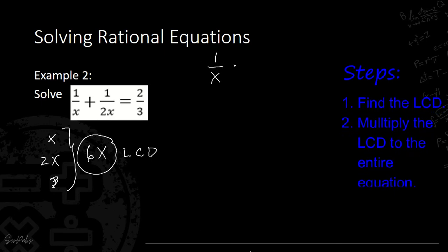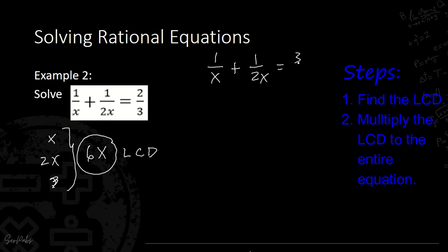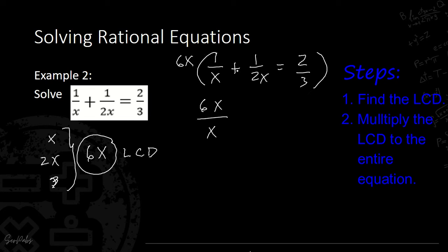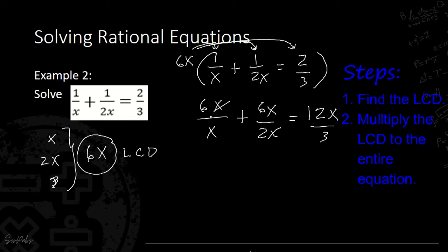The equation is 1 over x plus 1 over 2x equals 2 over 3. Multiply the entire equation by the LCD which is 6x. Using distributive multiplication: 6x times 1 over x equals 6; plus 6x times 1 over 2x equals 3 (copy x); equals 6x times 2 over 3, which gives 12x divided by 3, which is 4x.